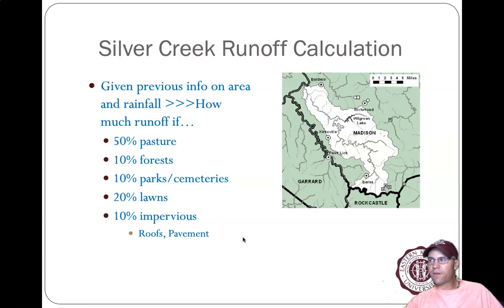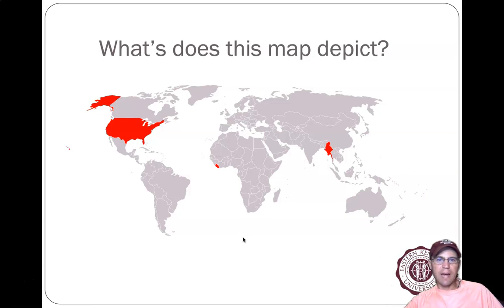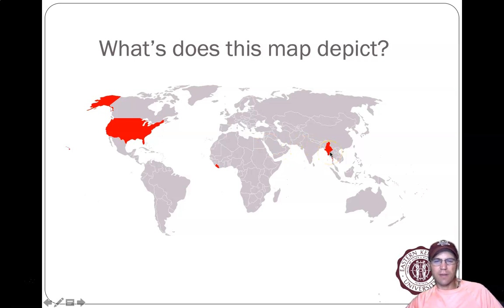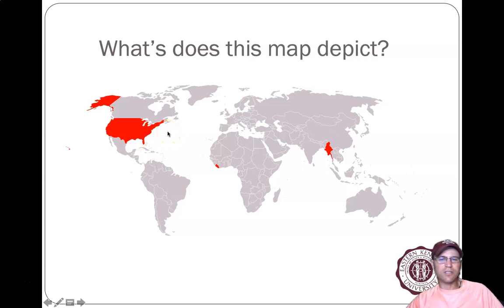Before we go into that, here's a quick note: this map shows the countries that still use U.S. customary measurements — that's Liberia, Myanmar (formerly Burma), and the United States. The rest of the world uses metric, talking in meters and liters, while we're still using feet, pounds, inches, and gallons. Just keep in mind for future work that some of what we cover here would need to be converted to the metric system.